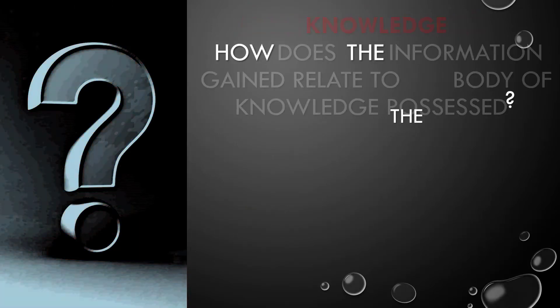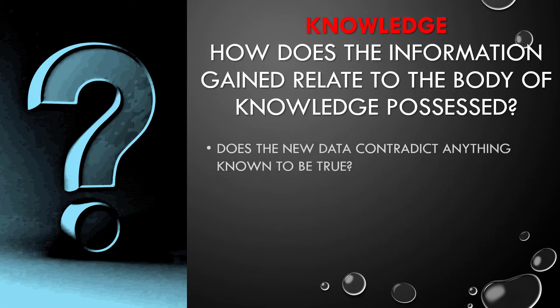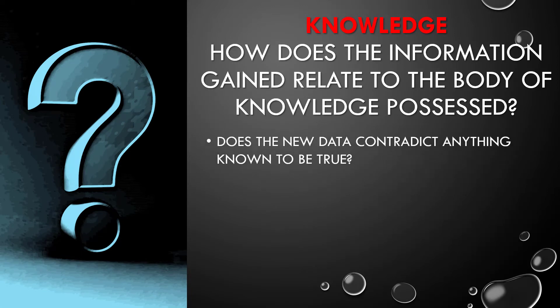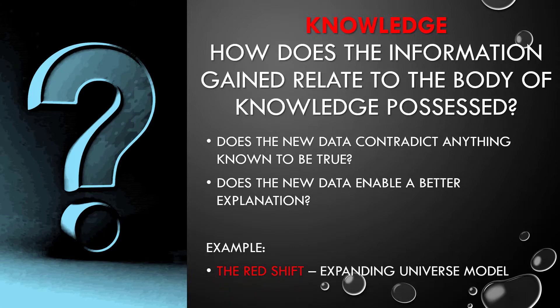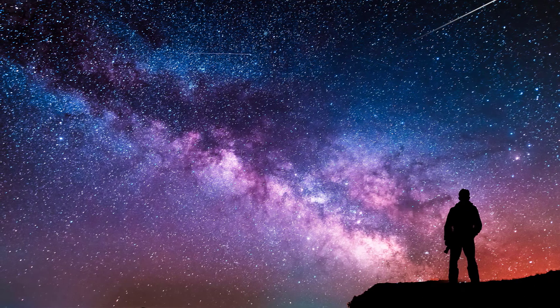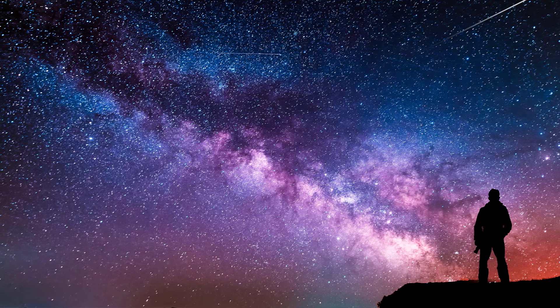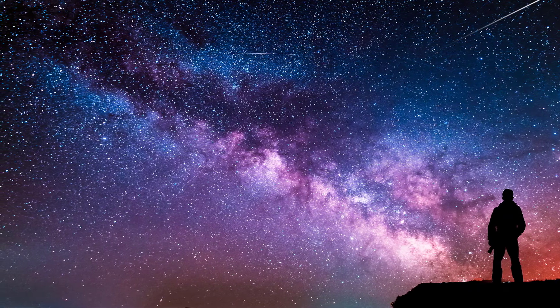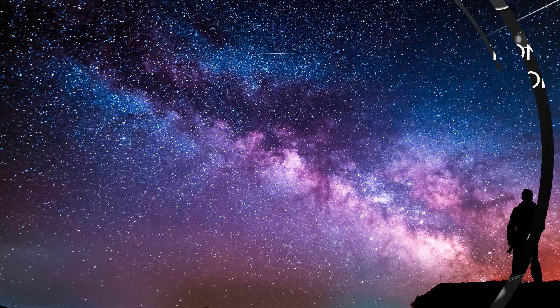All new data needs to be reflected upon in light of our prior knowledge — what we call background knowledge. Does the new information contradict anything known or believed to be true? Does it enable a better explanation than one previously given? For instance, the observed redshift — a shift into the red range of the spectrum as a light source moves away from an observer — led astronomers to notice distant stars seemed to be moving away from the observer. That didn't fit the steady state model of the universe, and ultimately scientists abandoned that in favor of an expanding model.